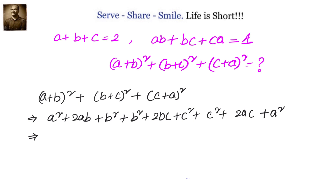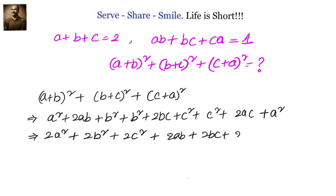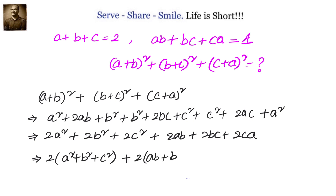Let us take care of the like terms. We have 2a² plus 2b² plus 2c² plus 2ab plus 2bc plus 2ca. Taking 2 as common, we have 2 into (a² plus b² plus c²) plus 2ab plus bc plus ca.